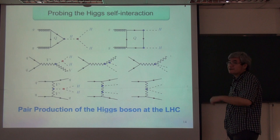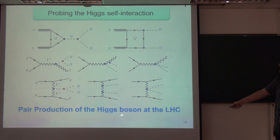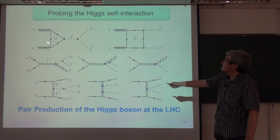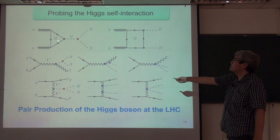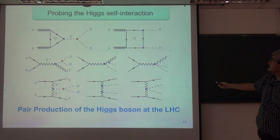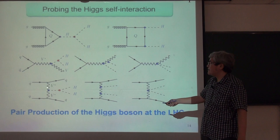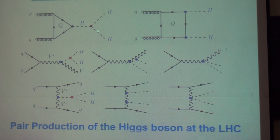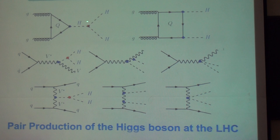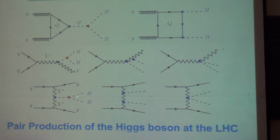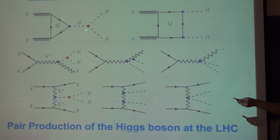The pair production of the Higgs process has the triangle and box diagrams. There is also a V-associated contribution — so-called VH, or the Higgs-strahlung process. This red vertex is actually the cubic Higgs coupling — the Higgs triple self-coupling. By seeing these diagrams and these processes, we hope that we can measure this cubic Higgs coupling.